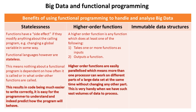The next benefit is higher order functions. In functional programming, a higher order function is any function which does at least one of the following: it takes one or more functions as its input, or it outputs a function. The important bit for the exam is that higher order functions are easily parallelized, meaning more than one processor can work on a different part of a large data set at the same time without changing any other part. This is very handy with big data, as our data is spread and distributed across multiple servers and pieces of hardware.